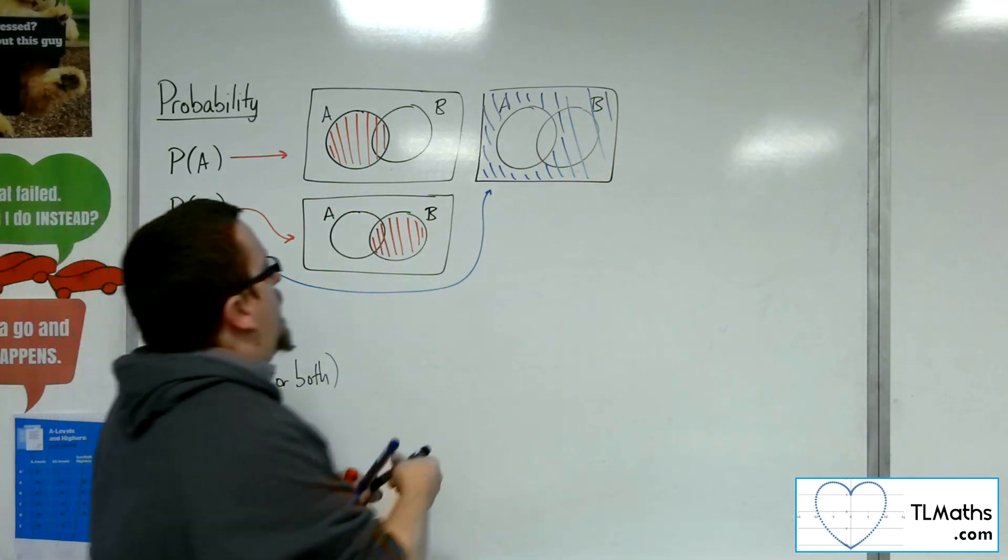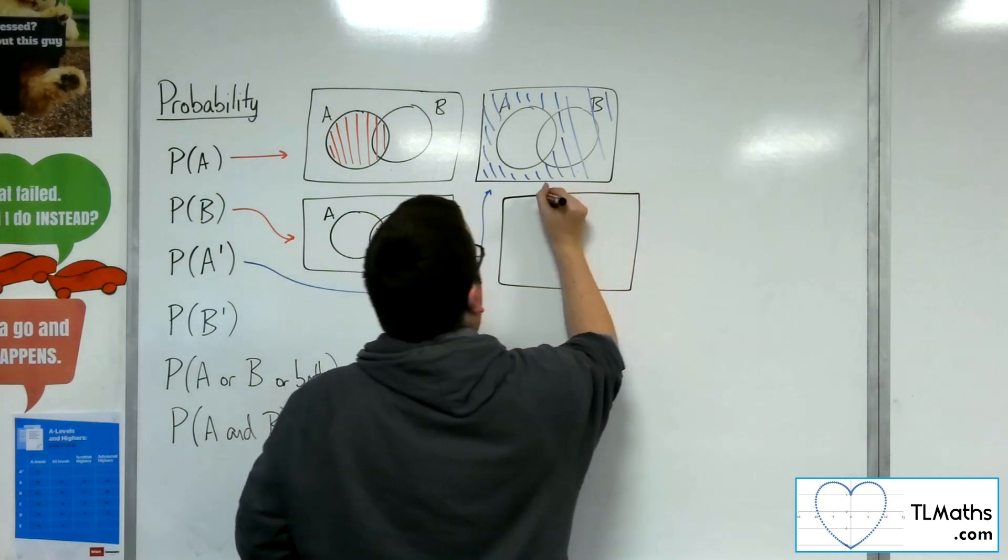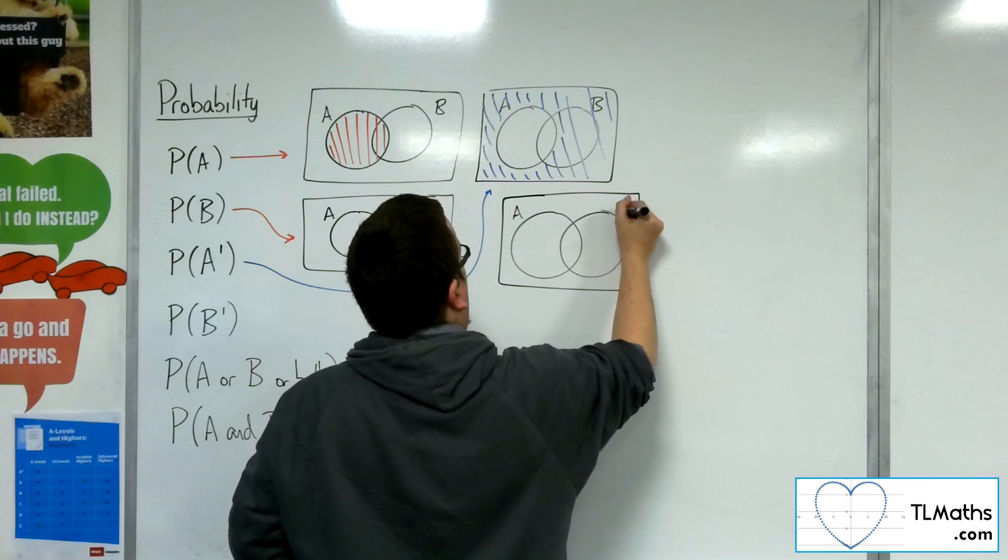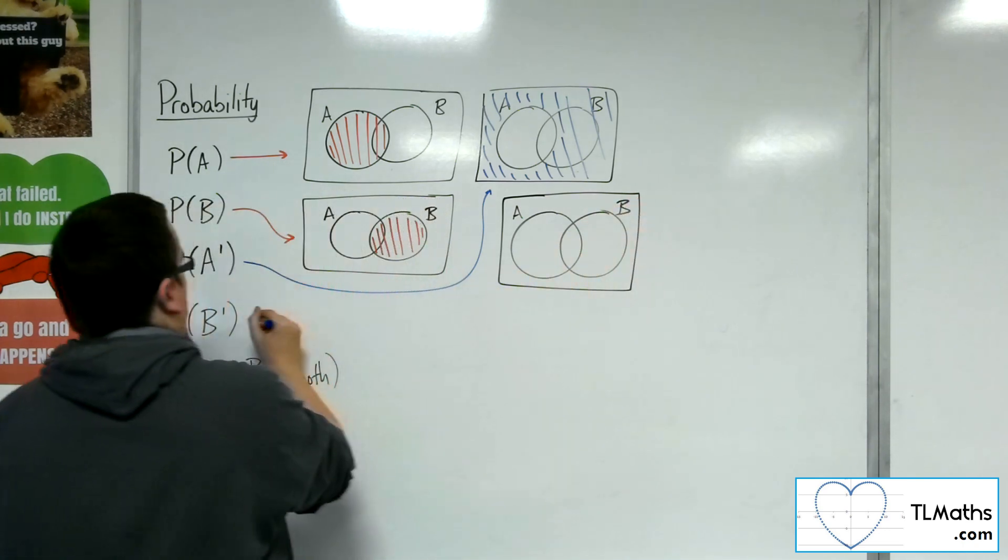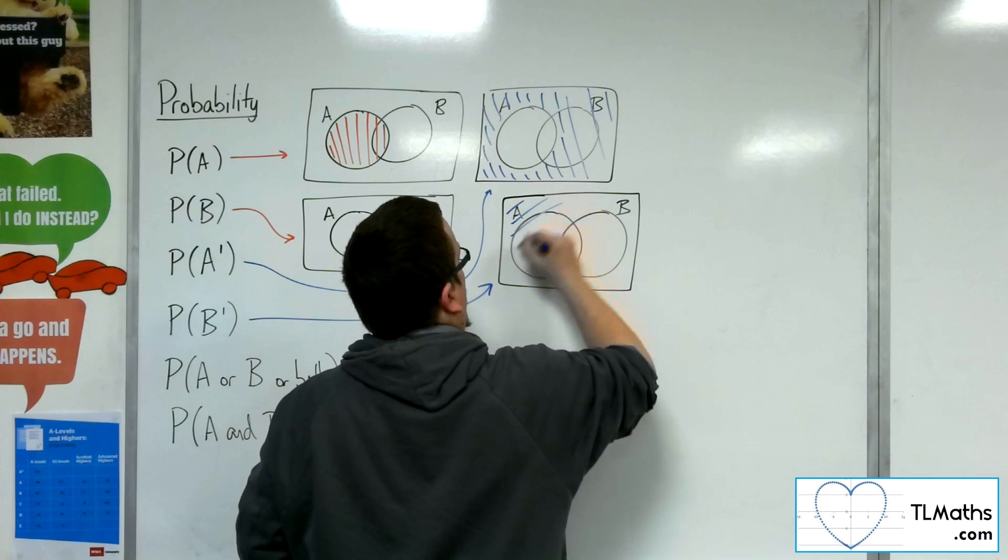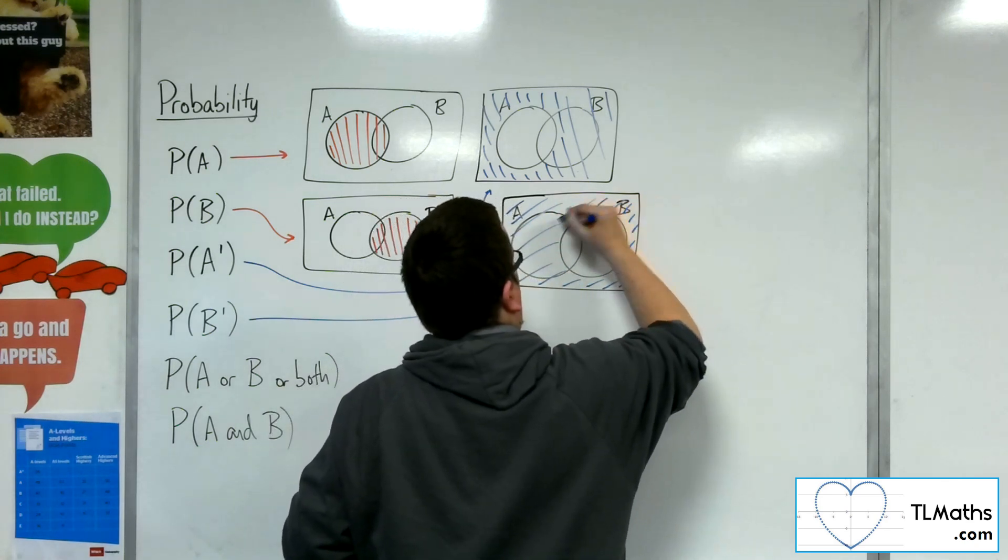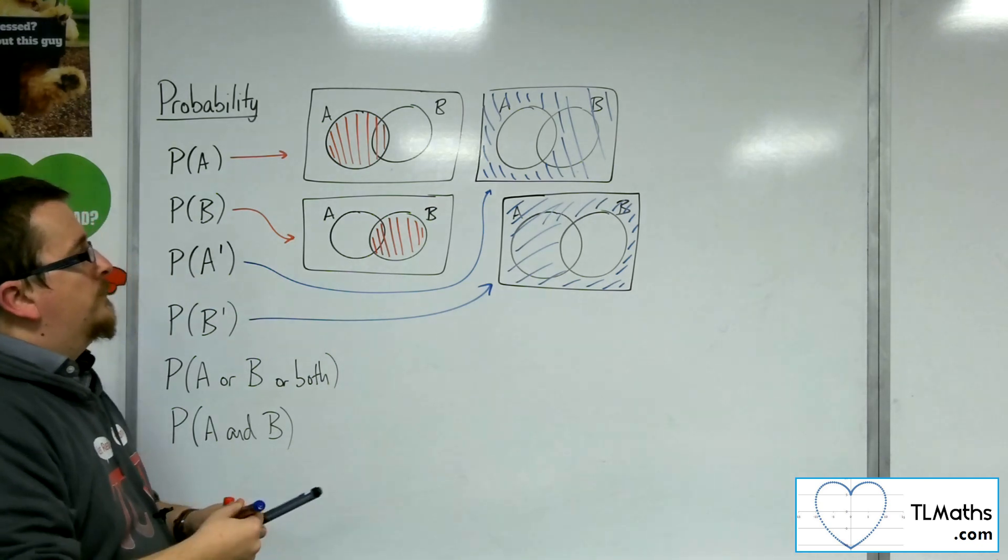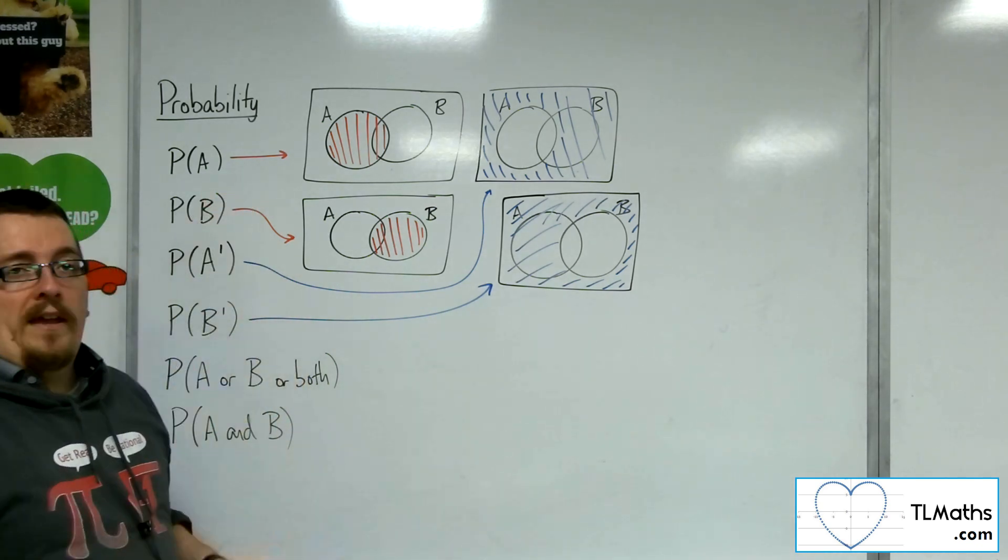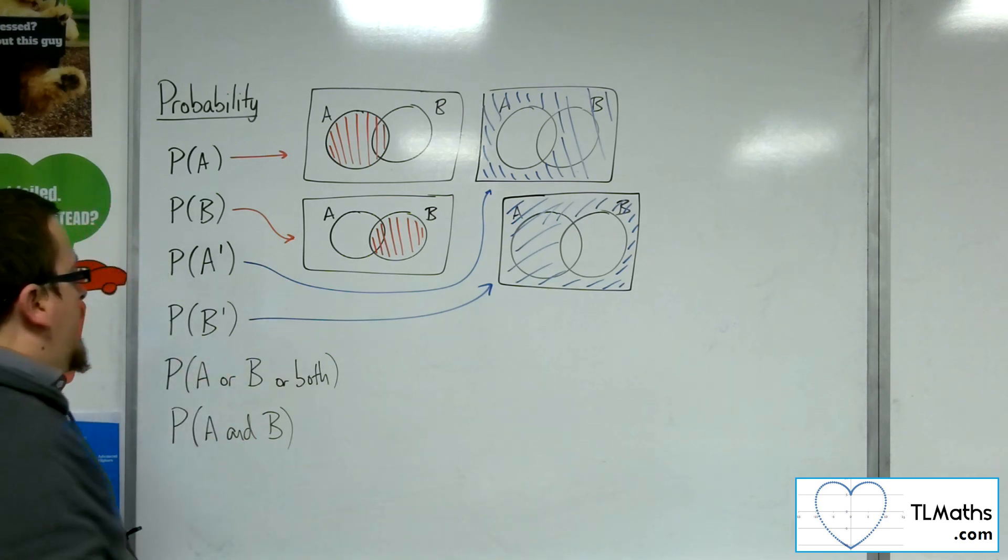So not B would be anything outside of B, anything outside of B, anything there. So they're kind of like your four basic ideas of shading a Venn diagram.